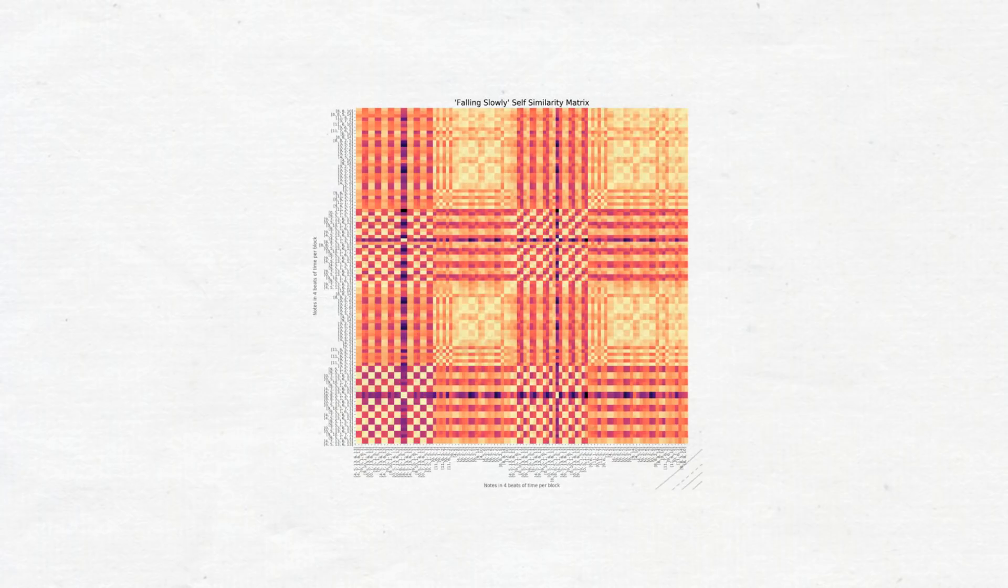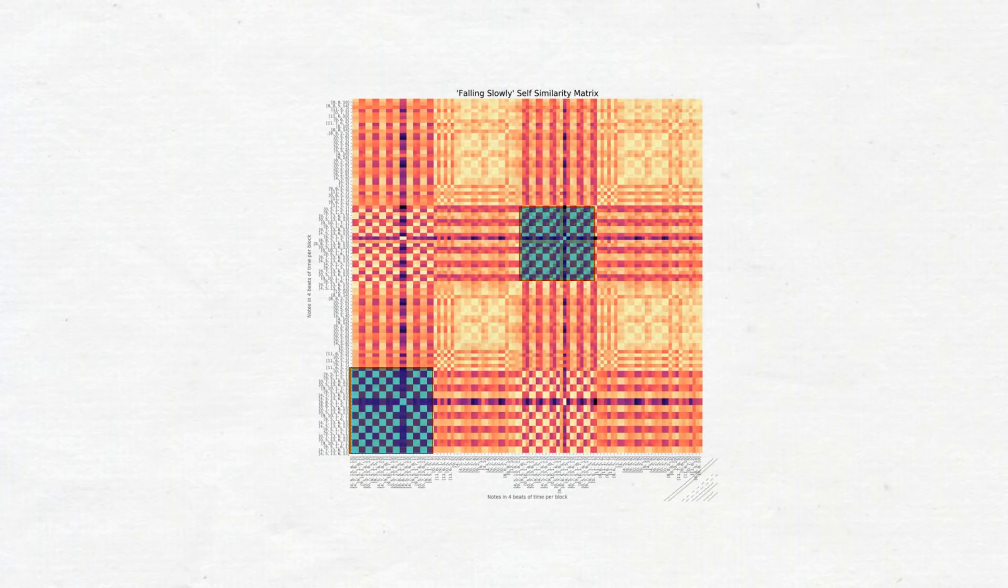This matrix is for the song, Falling Slowly. I color the first and the third cluster the same, because they are very similar, or self-similar. The second and the fourth segment are also very self-similar. I made 20 of these self-similarity matrices of the 20 pop songs I used as input data. And I made my machine copy their structures as best as it can.